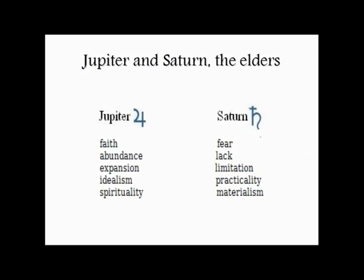Jupiter is the idealism and aspiration to grow in awareness that finds its expression on a social collective level as religion and philosophy — as the products of this desire for greater and fuller awareness, greater knowledge in the fullest and most comprehensive sense of the word. From this religion and philosophy, we also get law and ethical codes.